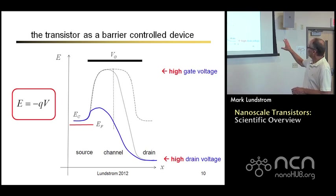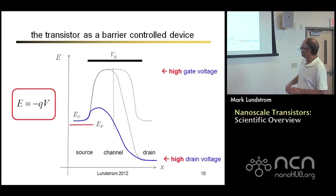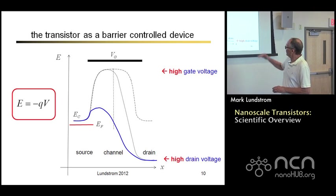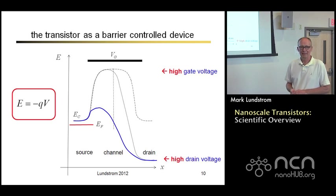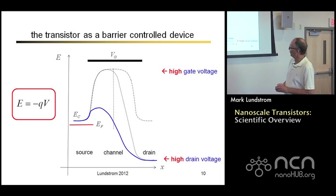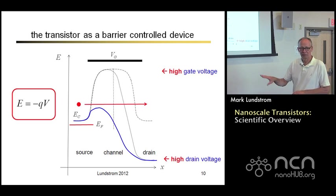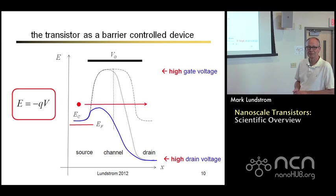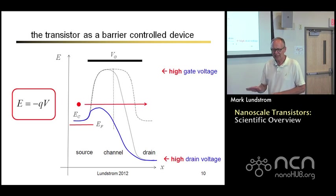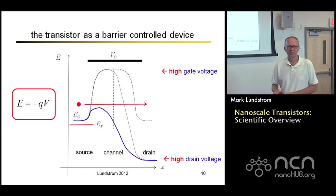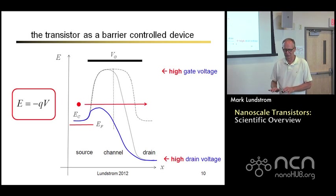From freshman physics, an electrostatic potential or voltage V lowers the potential energy of electrons. If we apply a voltage to the drain terminal, that pulls the potential energy in the drain way down, but electrons still can't flow from source to drain because there's a large energy barrier stopping them. If we now apply a high gate voltage in addition, that pulls the potential energy down in the channel. Now we have a small energy barrier between the source and the channel — electrons can flow over that barrier and out the drain, and current flows. That's the basic physics of a transistor.